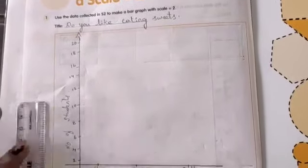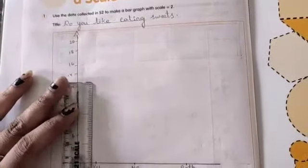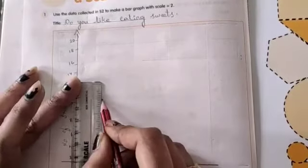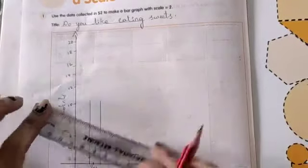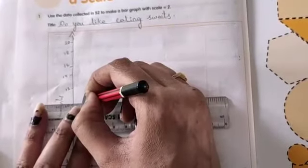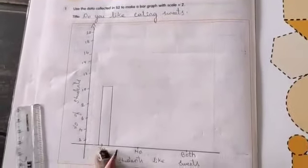So here, yes, how many students children? 10. So what we have to do is we have to draw the bar like this. With the help of scale, we have to draw 2 straight lines and we have to attach them. Like this. This is called bar.